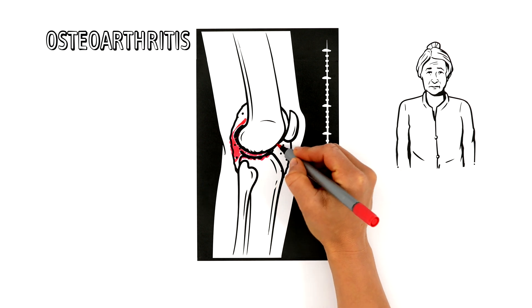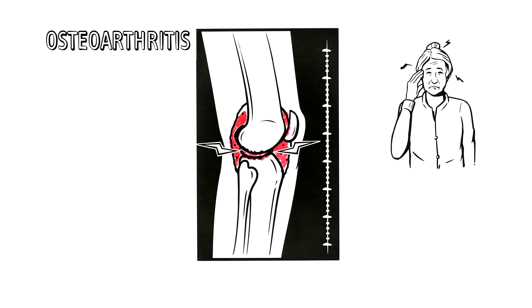The joint line shrinks, the bones move closer together, and the first damage to the ends of the bones starts. This is what is called early stage osteoarthritis. If no treatment is given, the cartilage layer will continue to get thinner.